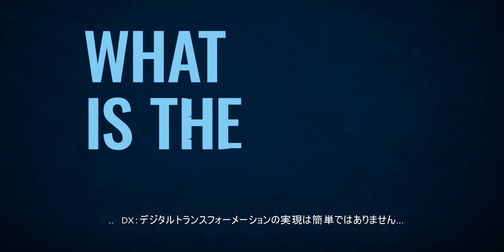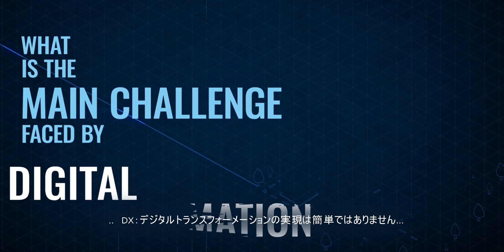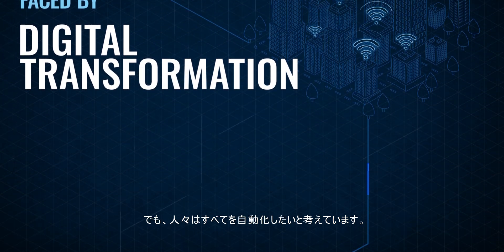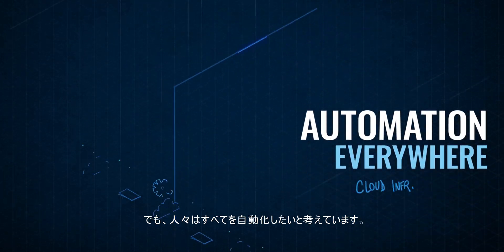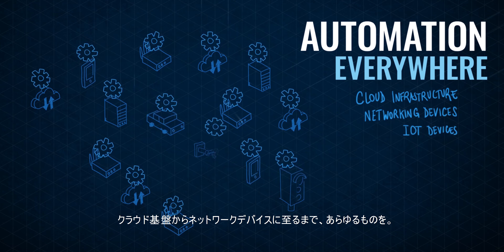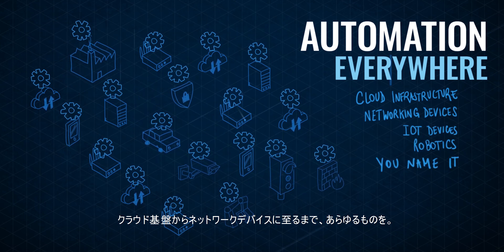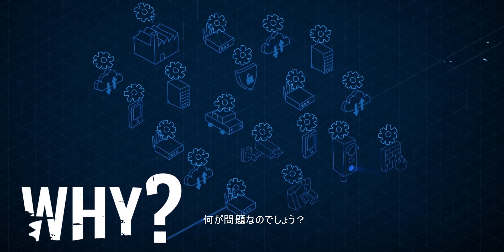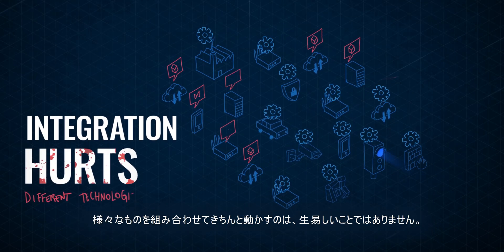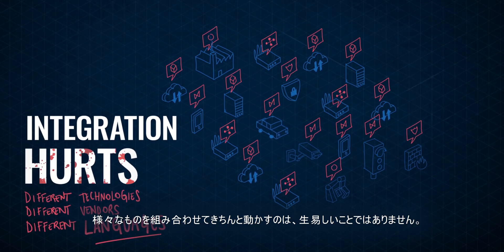I tell you what, digital transformation is not easy. Folks all want to automate everything from cloud infrastructure to networking devices, you name it. So why is that a problem? Getting all these infrastructure parts integrated together is painful.